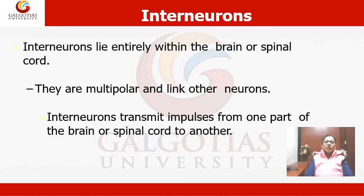The second type is interneurons. Interneurons lie entirely within the brain or spinal cord — they are multipolar and link other neurons. Interneurons transmit impulses from one part of the brain or spinal cord to another.